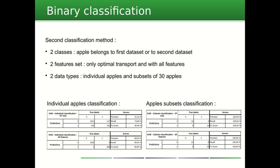The best results are again obtained with the SVM and are really satisfactory, with an accuracy of 100% for the subsets of apples, whatever the chosen features. For the individual classification, we reach almost 100% with all the features, and the accuracy remains above 50% if we use only optimal transport.